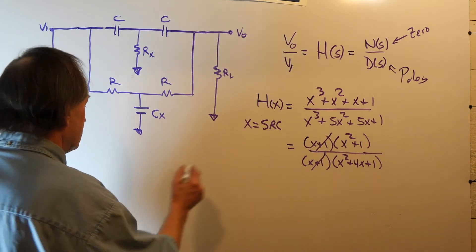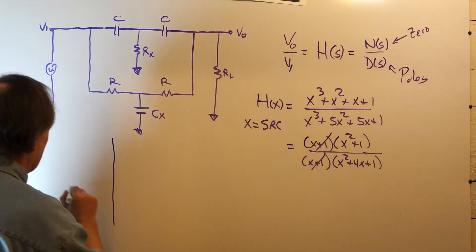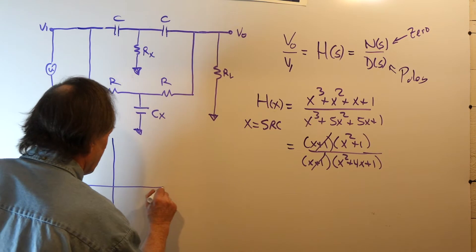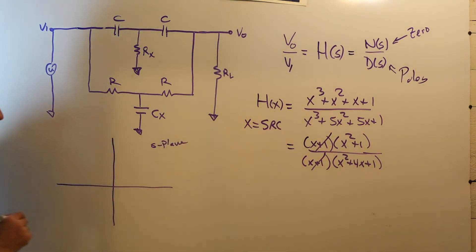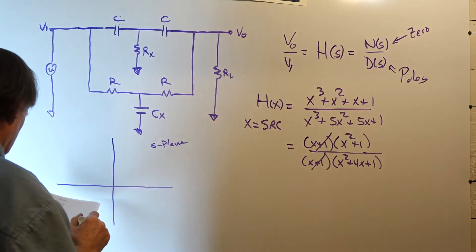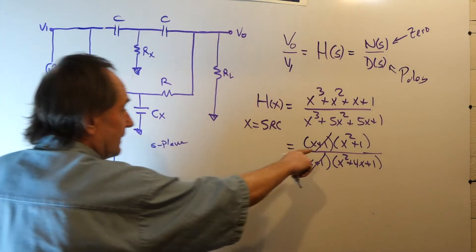What this means is that if you were to look in the S-plane, or the pole zero constellation for this network, we will end up...